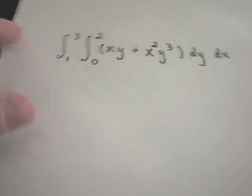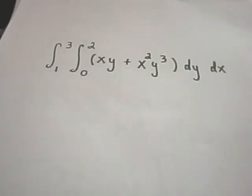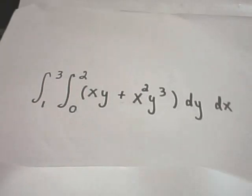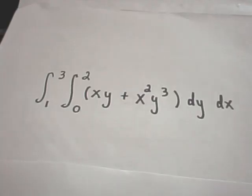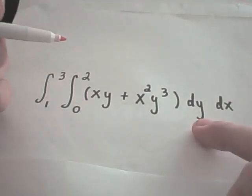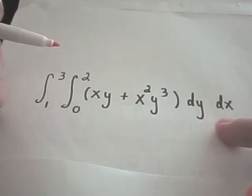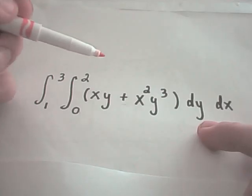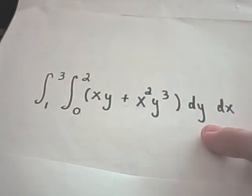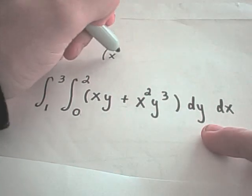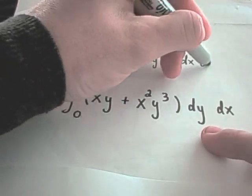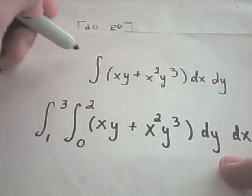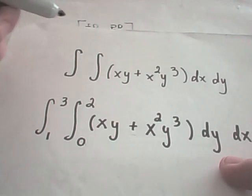All right. So in this problem, we're actually going to calculate a double integral. From 1 to 3 and from 0 to 2 of the quantity xy plus x squared y cubed. We're going to integrate this with respect to y first and with respect to x first. And you have to be careful. The notation that you see on the outside definitely has to do with an order. You could integrate this with respect to x first.